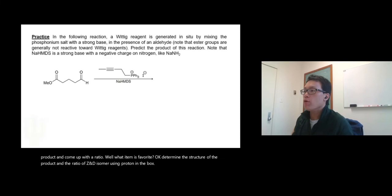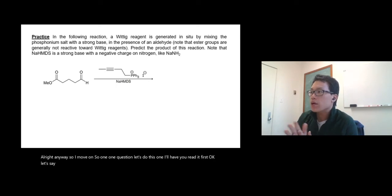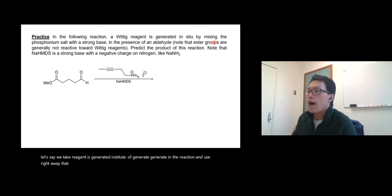Anyway, so let's move on. One question, let's do this one, I'll have you read it first. Okay, let's say a Wittig reagent is generated in situ—generate in the reaction and use right away—by mixing the phosphonium salt right here with a strong base.